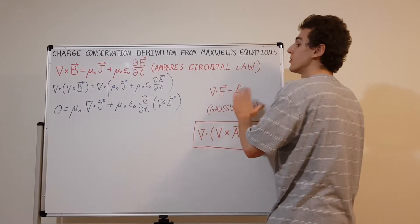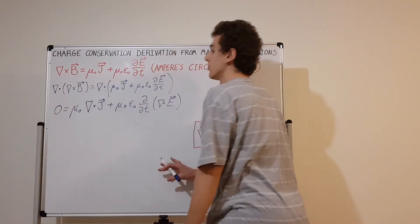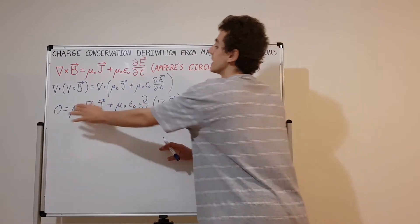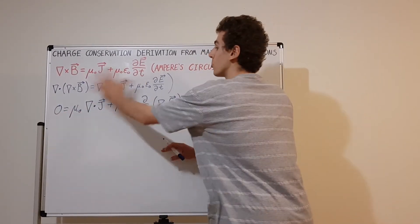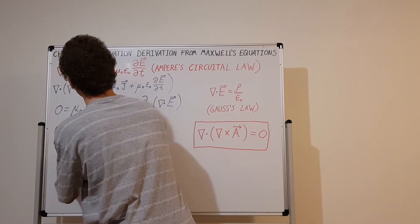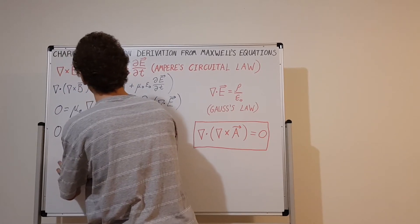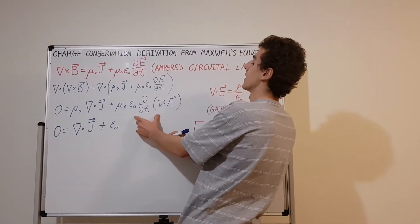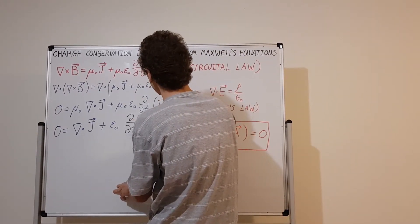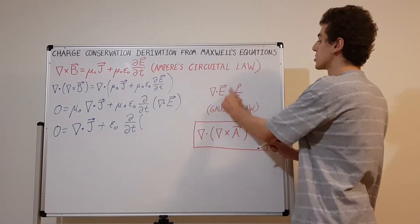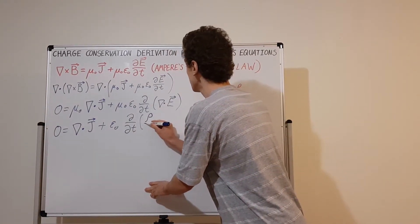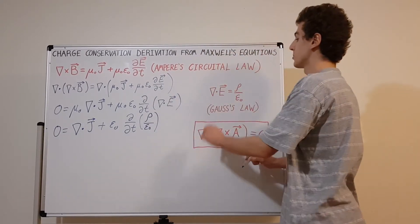Since everything equals zero, we can divide through by mu-nought. That gives zero equals the divergence of J plus epsilon-nought times the partial derivative of the divergence of E. Now we substitute Gauss's law: the divergence of E equals rho over epsilon-nought. So inside the partial derivative we place rho over epsilon-nought.